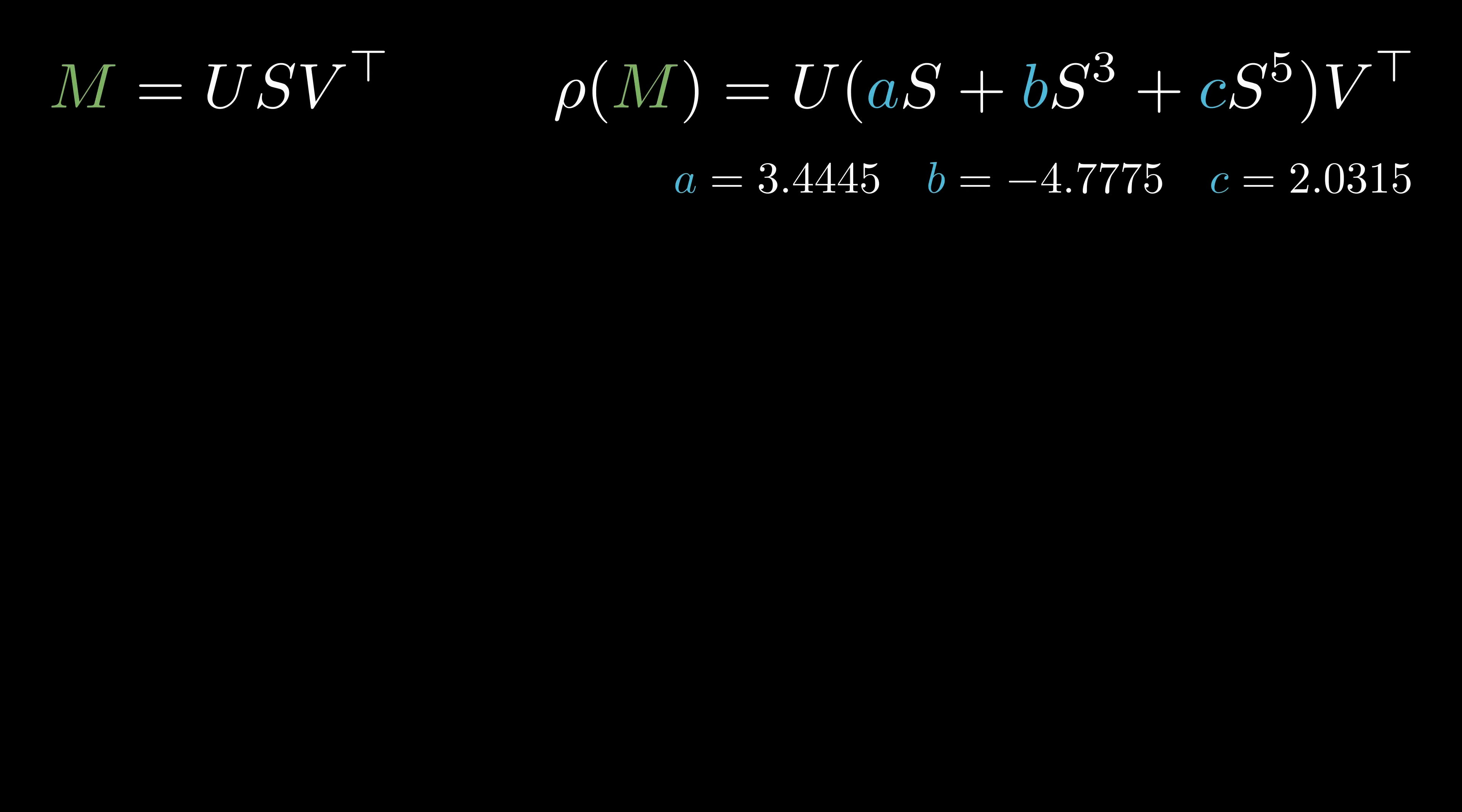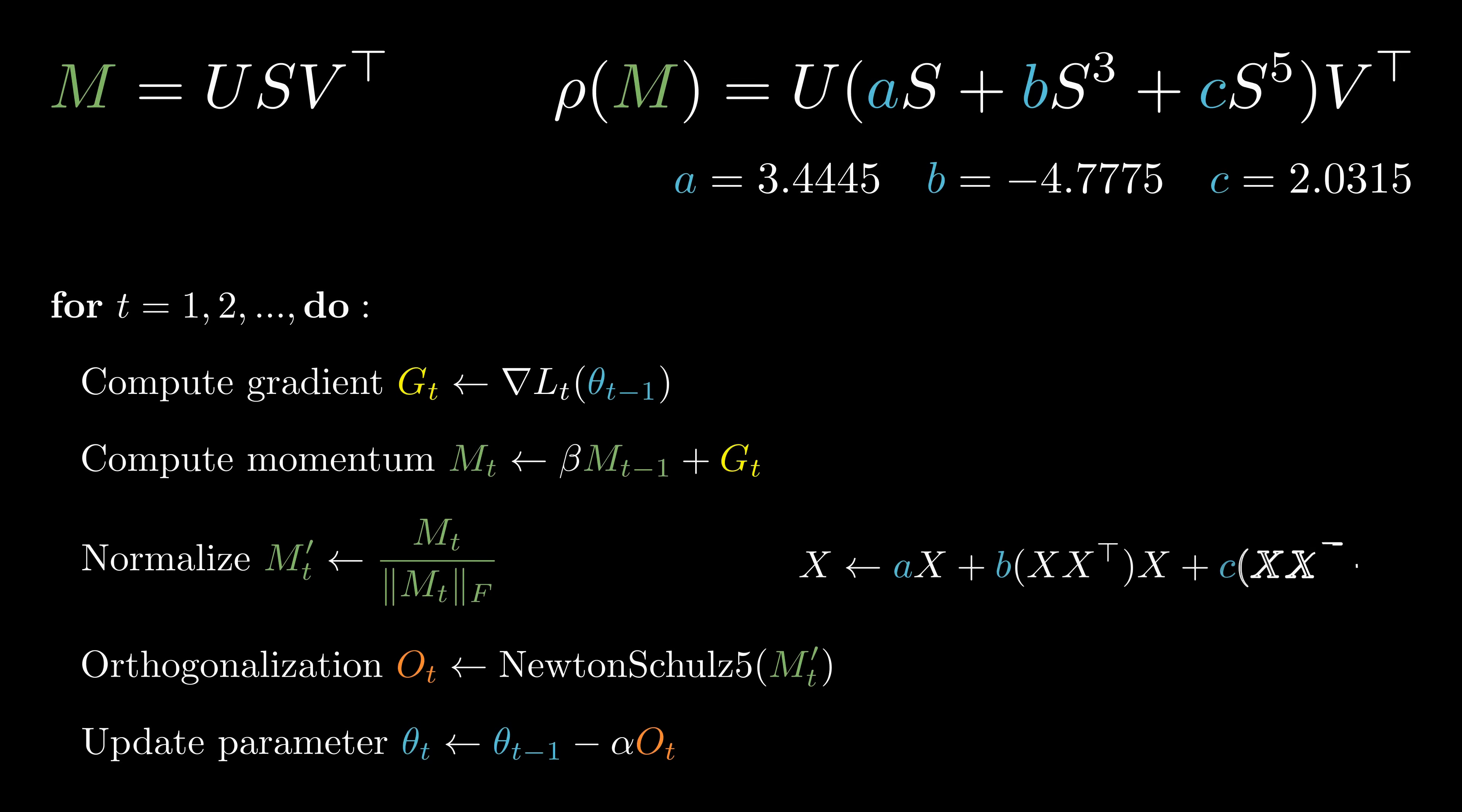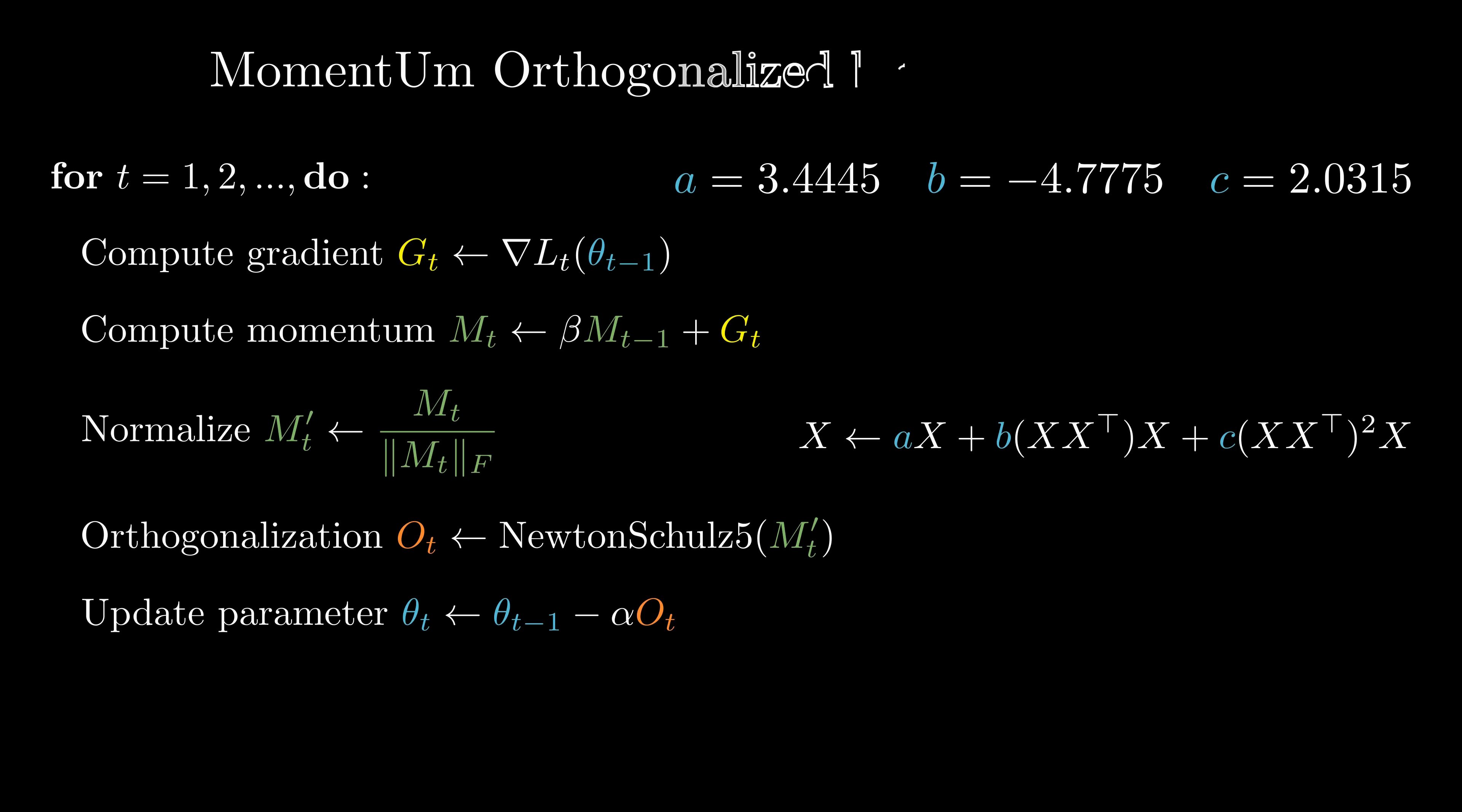With this trick, we can now write down the algorithm. For each update iteration, we first compute the gradient gt using back-propagation. We then update the momentum as an exponential moving average of the past gradients. Next, we normalize the 2D momentum matrix so that it has a unit norm. This ensures that the initial singular values are all between 0 and 1. We repeat this orthogonalization process 5 times to get matrix O, and then use O to update the parameters. Each iteration involves only matrix multiplications, which can be efficiently computed with GPUs, without the need to compute SVD. This method is called momentum orthogonalization by Newton-Schultz, or muon.